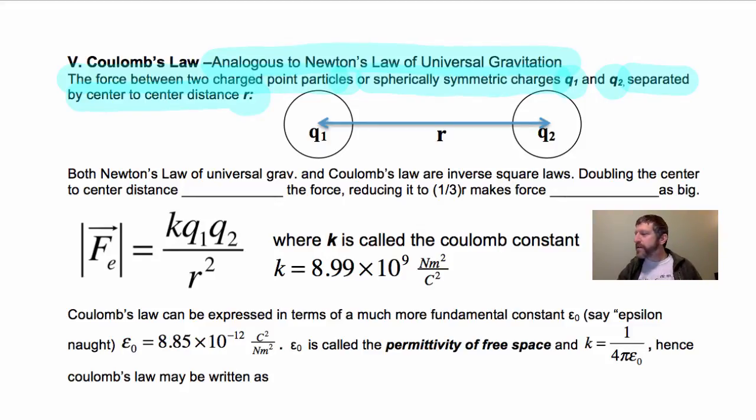And this is an inverse square law, just like Newton's Law of Universal Gravity. They're both inverse square laws. That simply means that if you double the center-to-center distance between the two charged objects, what does that do to the force between them?